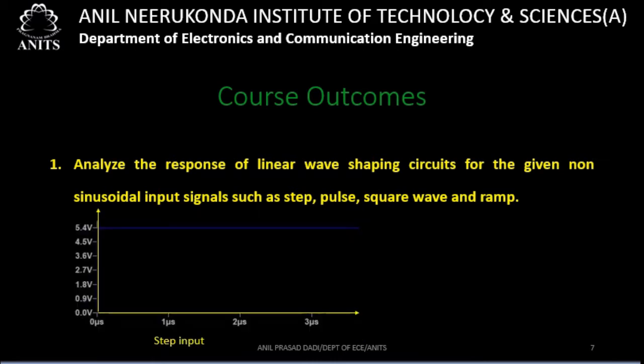A step input can be represented mathematically as x(t) = V for t ≥ 0, and 0 for t < 0. That means when t < 0 there is no input, and input exists only when t ≥ 0. If the magnitude is 1, we call it a unit step input signal; otherwise it is simply a step input signal.